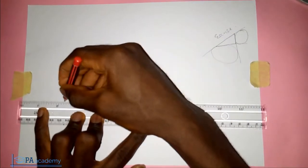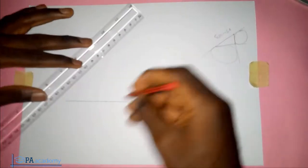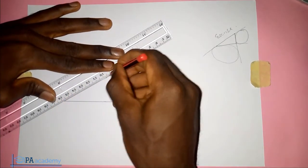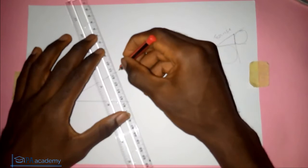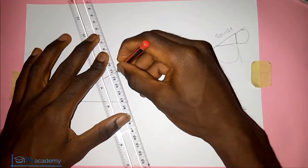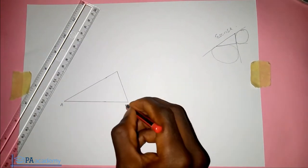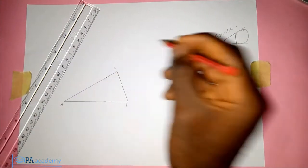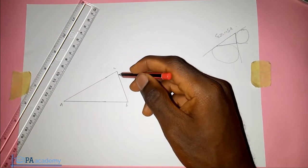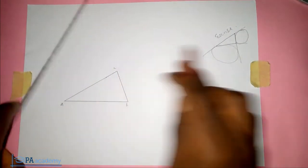So I'm just going to be drawing a random triangle — there's no need to start measuring it. So this is a triangle. Let's call this point A, point B, and then point C. I want to ascribe a circle on the side of line BC, so what you are going to do is just extend these lines.